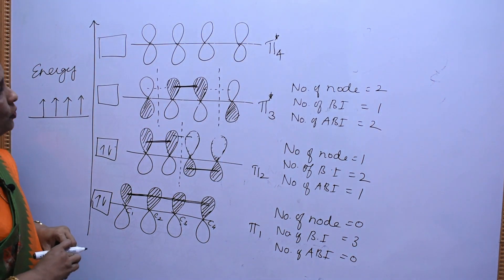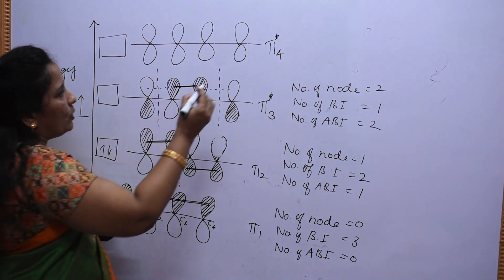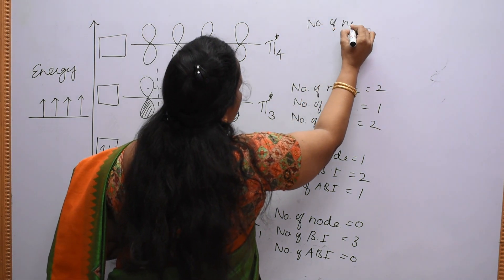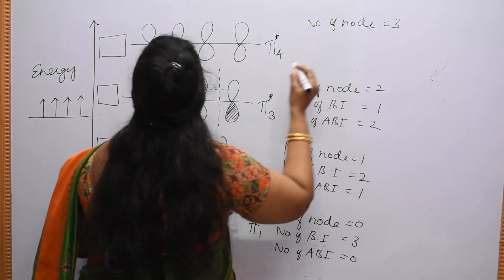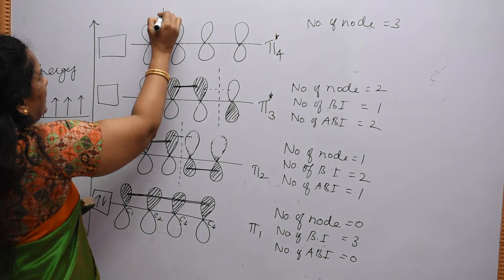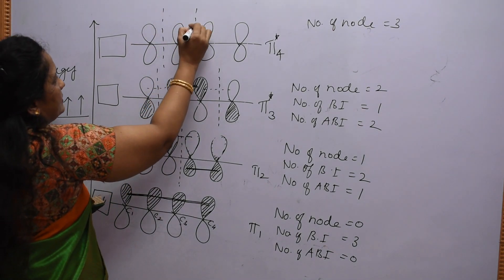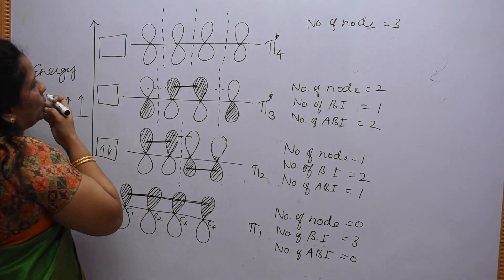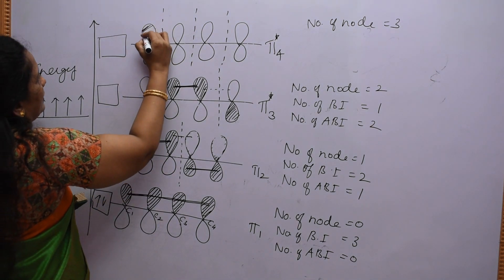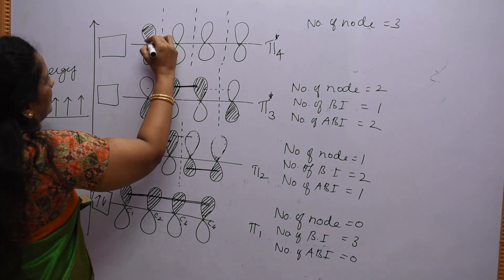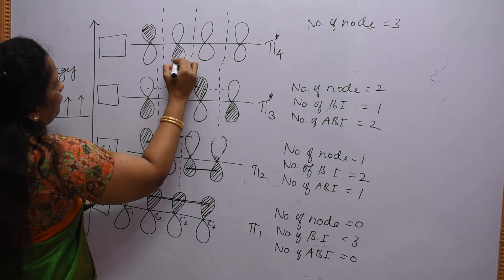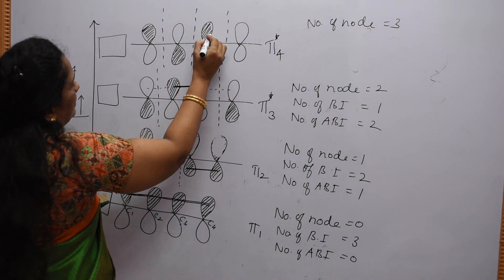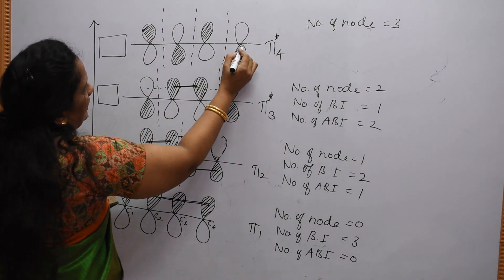Coming to pi star 4, the number of nodes is equal to 3. With nodes arranged like this, the lobes will have alternating signs such that no adjacent lobes share the same sign.